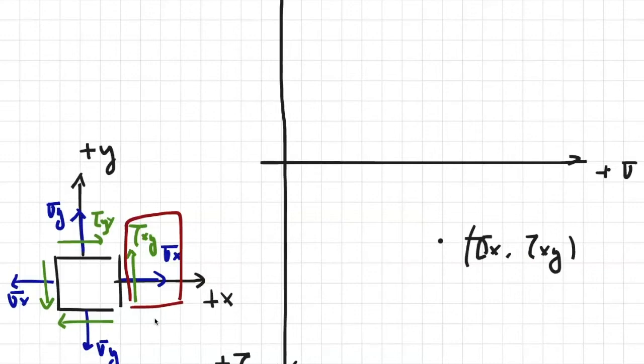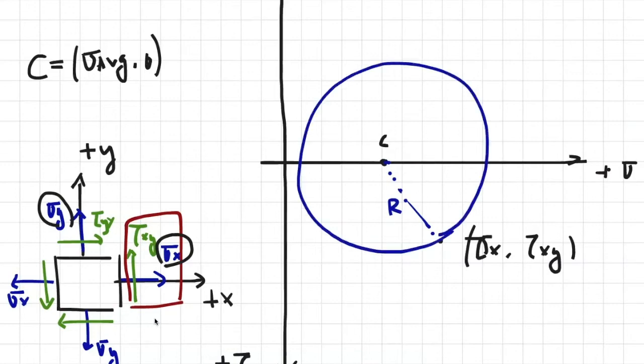Then by our previous equations that we derived, we can find the center of the circle, which is located at sigma average and 0. And sigma average is just sigma x plus sigma y over 2. Then we find these values, and we plot that on our sigma axis. That's just our center of the circle. Then we connect these two dots that we drew, and that's just the radius of the circle. Now we can draw this circle since we know its center and a dot on its circumference.